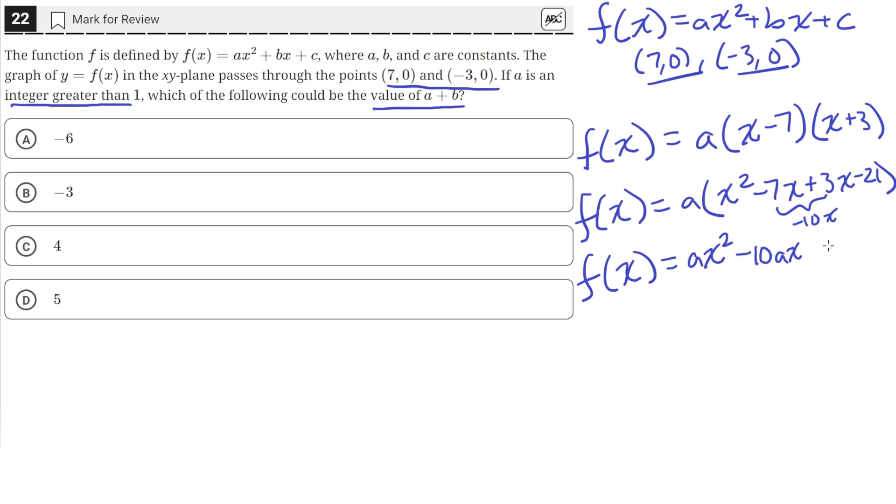Oh whoops, this should actually be positive 3x, since x times 3 is positive. So if this is positive, then this should be negative 4x. So negative 4x times a is negative 4ax, and then negative 21 times a is just negative 21a.